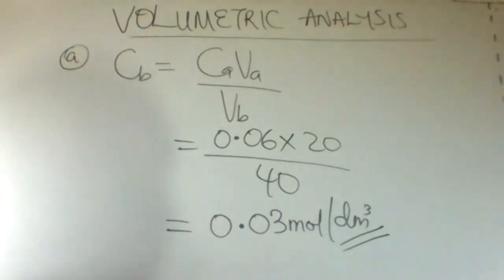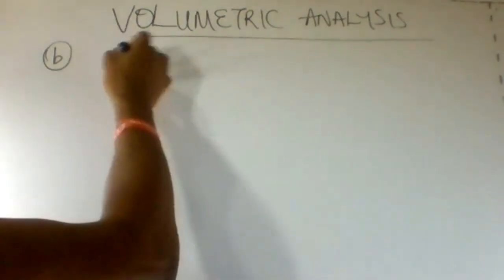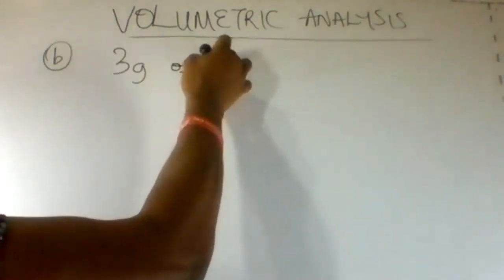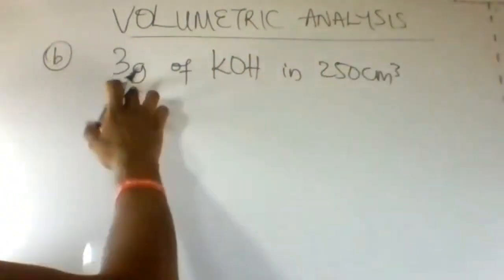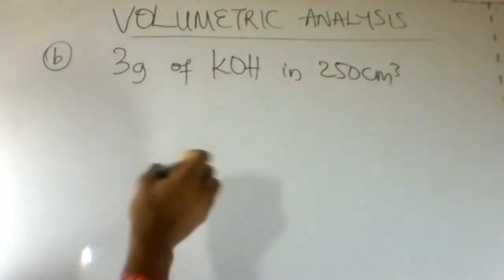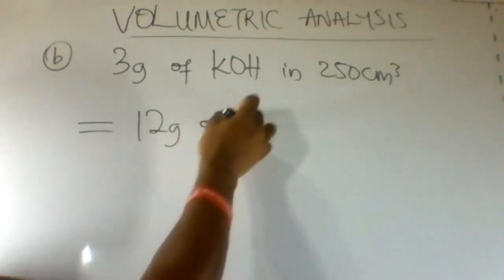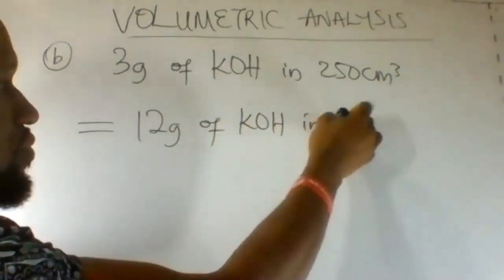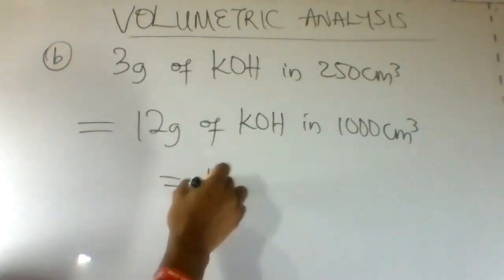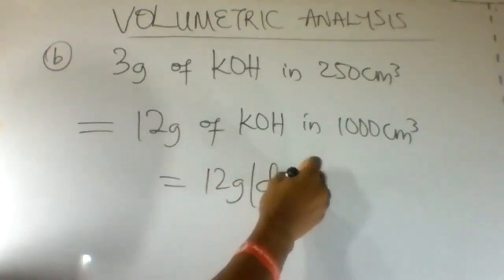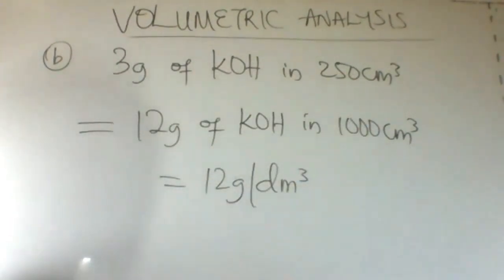This answers the first part of our question. For the second part, the question gave us 3 grams of KOH in 250 cm³. Therefore, this is equivalent to 12 grams of KOH in 1000 cm³. Mass concentration for KOH is 12 grams per dm³. Since it is 3 grams in 250, it will be 12 grams in 1000.